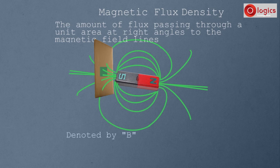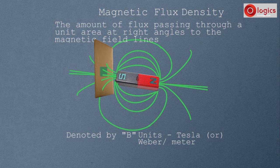Magnetic flux density is denoted by the symbol B, and is measured in units called Tesla, or Weber per meter squared.